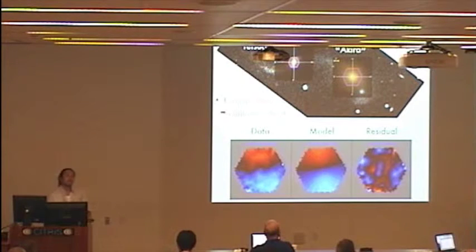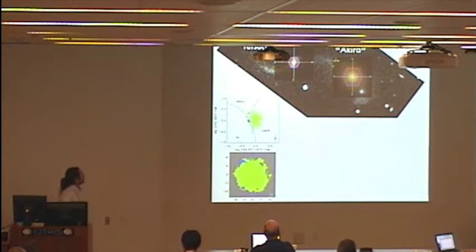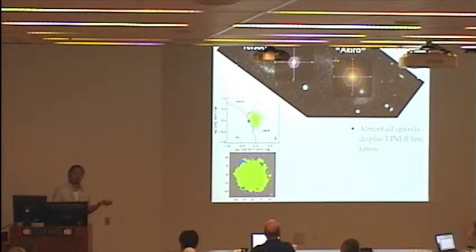Now, given that this is an outflowing wind, the next question that we have is, what's ionizing this gas? So here's the BPT diagram, O3 over H-beta versus S2 over H-alpha, of all the spaxels in Akira that have signal-to-noise greater than 5 in these four lines. And this plot, this map below, is a resolved BPT diagram. Every spaxel is color-coded according to its location in the BPT diagram above. And you can see that almost all spaxels display LINER-like ratios. And according to recent work from ATLAS-3D and others, LINER-like ratios in early type galaxies are most likely generated by evolved stars.